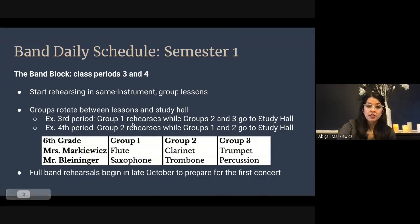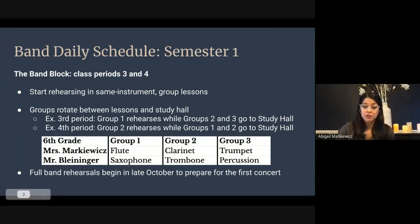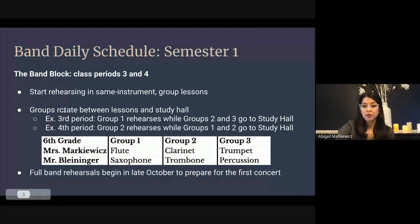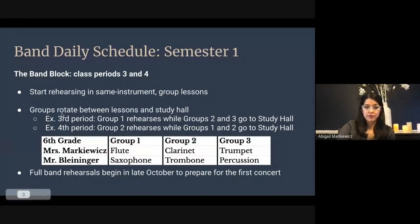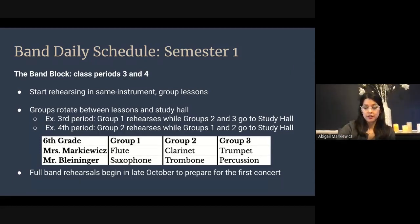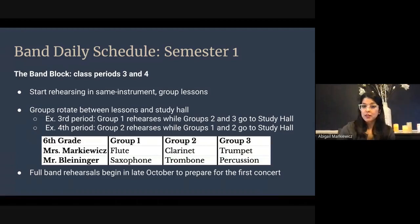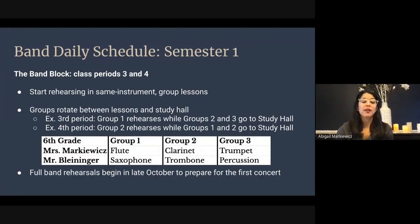The group rehearsing that day — for example, flutes would rehearse with me and saxophones with Mr. B. These groups don't actually rehearse together; flutes and saxophones don't play together, they're just within the same group. When we rotate between group lessons, one class period includes a study hall — we do build in a study hall for sixth graders. For third period, anybody in group one, the flutes and saxophone players, would practice in their group lesson. One group rehearses in the auditorium, another in the band suite.